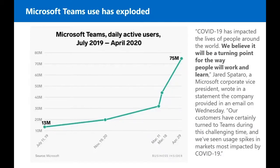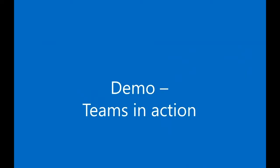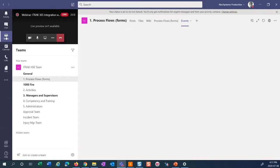Ever since COVID-19, Microsoft Teams usage has absolutely exploded. Beginning of July last year there were 13 million users; now there are over 75 million users. The massive shift to remote work makes online collaboration and video conferencing absolutely essential. The value Microsoft Teams brings allows those working remotely and in the office to easily collaborate with one another. With iTrack integrating with Teams, you can now remain in the Teams platform and surface iTrack Dynamics pages and the portal pages.